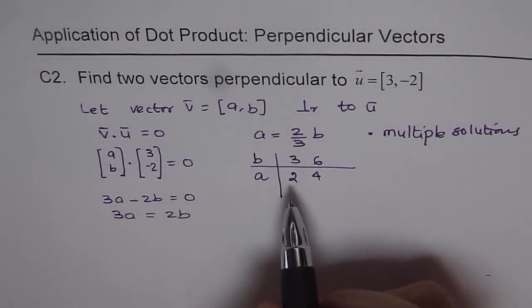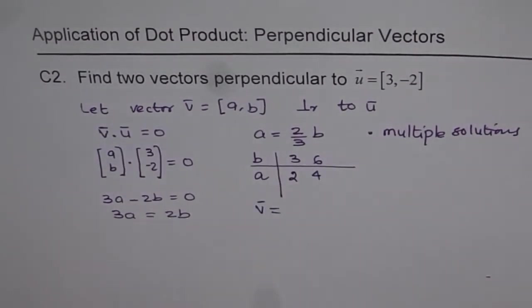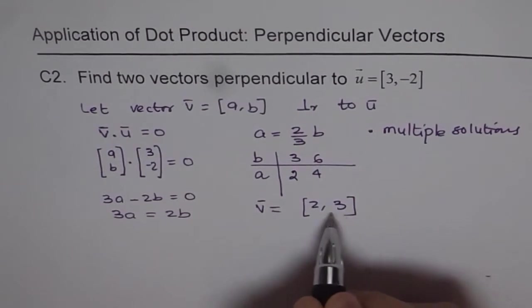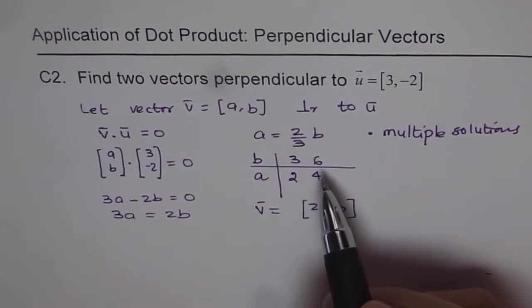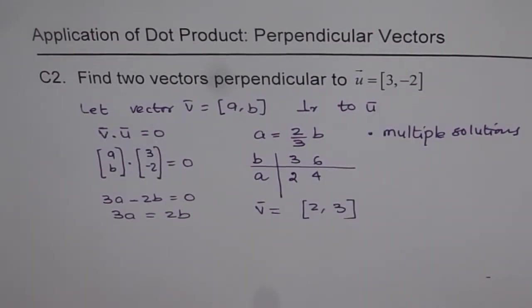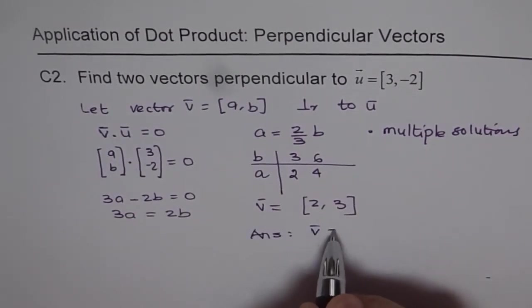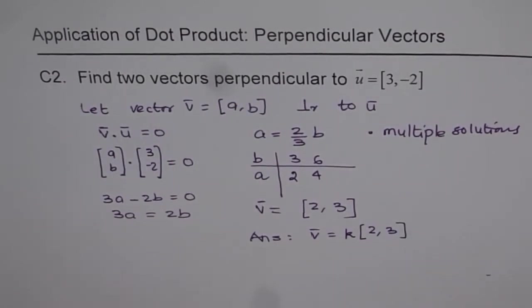All these vectors will be perpendicular to u. One of the possible answers: we get 2 and 3 as the combination which fulfills this. You'll notice that this vector is a scalar multiple of this. You could write any vector which has this direction and it will be perpendicular to the given vector. In general, I can write answer as vector v = k[2, 3], where k is some constant.